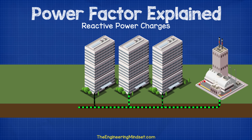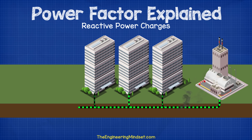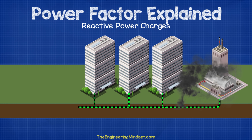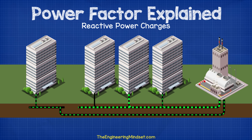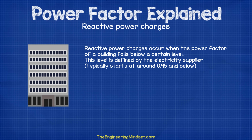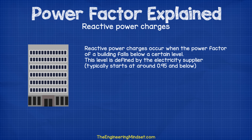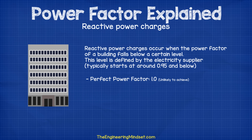Cables are rated to handle a certain amount of current flowing through them. So if a lot of large consumers connect with bad power factor, the cables could overload. They could also struggle to meet the demand and capacity agreements, and then no new customers will be able to connect until they either replace or install additional cables. Reactive power charges occur when the power factor of a building falls below a certain level, typically starting around 0.95 and below. A perfect power factor would be one; however, in reality, this is almost impossible to achieve.